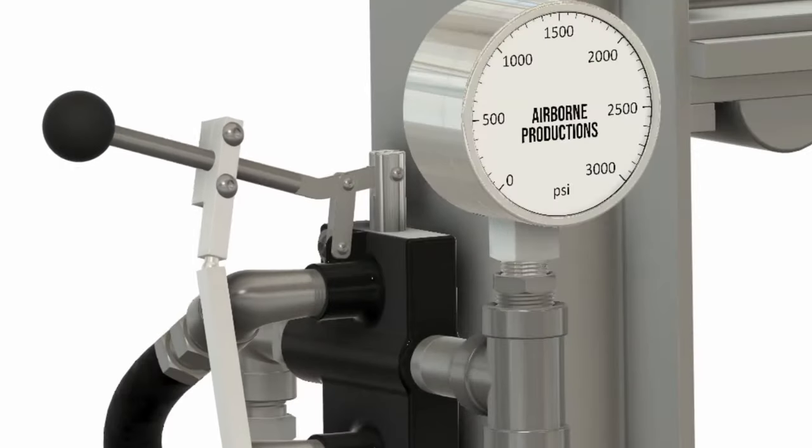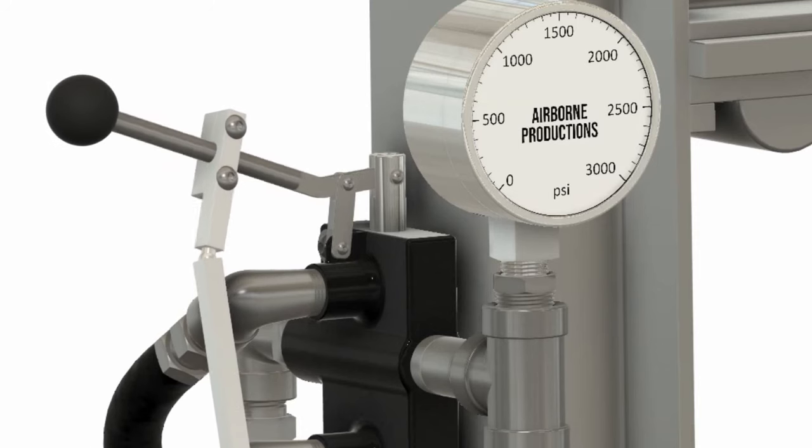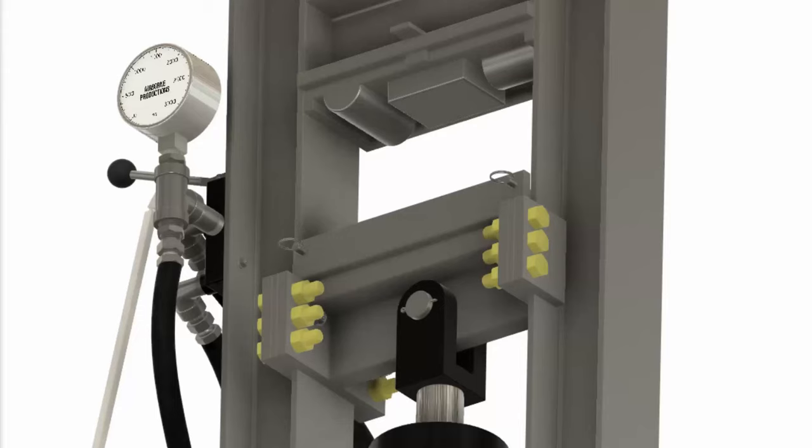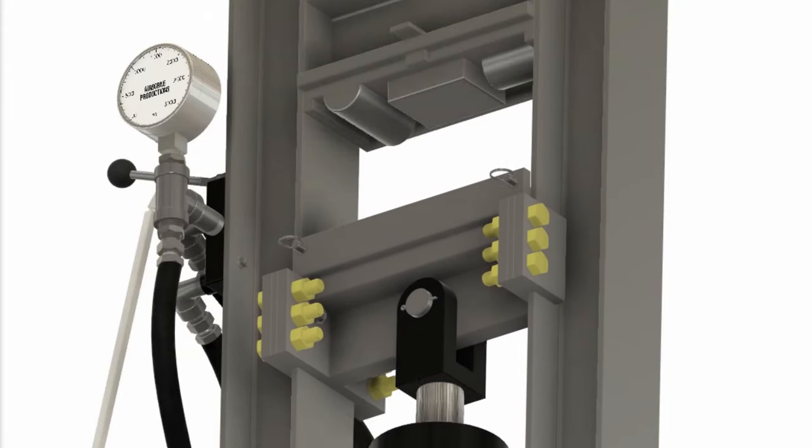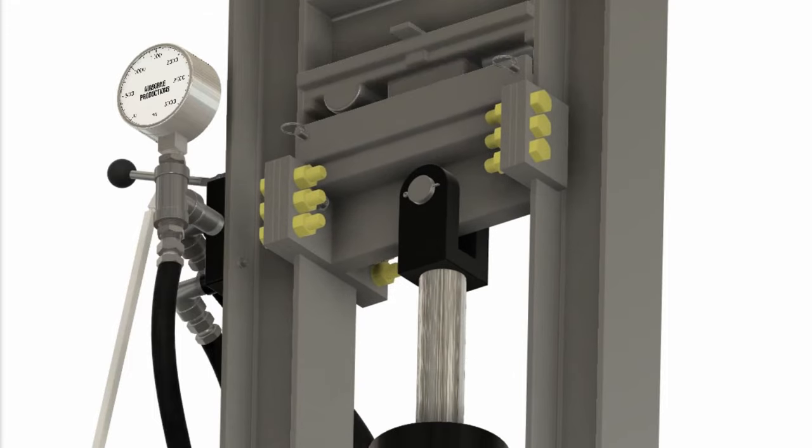However, when the valve is moved up or down, fluid is diverted to one of the two lines connected to the hydraulic cylinder. When fluid travels to the top of the cylinder, the ram is retracted. Flip the valve the opposite direction and fluid will be sent to the bottom of the cylinder, extending the ram.